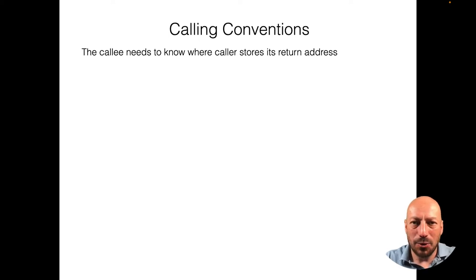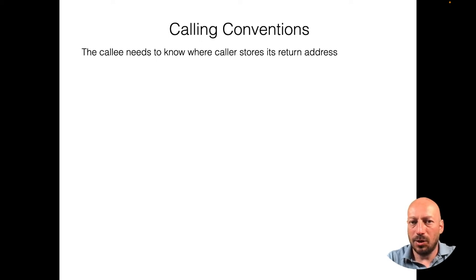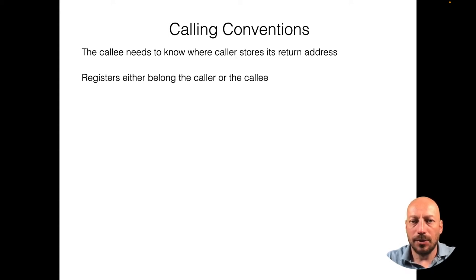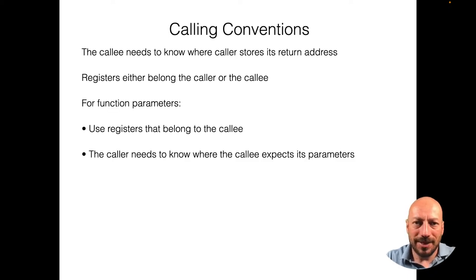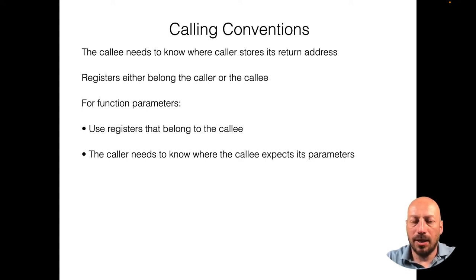In this demo you already saw that some conventions are needed — the callee needed to know where the return address was stored by the caller, otherwise there is no going back. To extend this so we also have local variables, parameters, and return values, we divide the registers into registers that belong to the caller and registers that belong to the callee. Once we do that, we can use certain registers for passing parameters and receiving return values. We have to think about the right ownership — for example, a parameter register belongs to the callee.